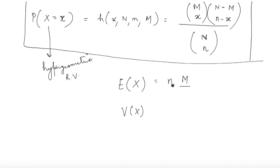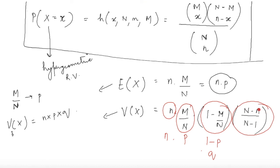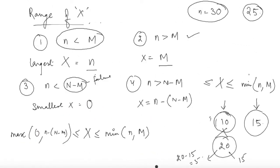The expected value is n times M divided by N. The variance is n times M by N times (1 minus M by N) times (N minus n) divided by (N minus 1). This factor, N minus n over N minus 1, is called the finite population correction factor, which is less than 1. This is the hypergeometric distribution and how you derive the probability function.